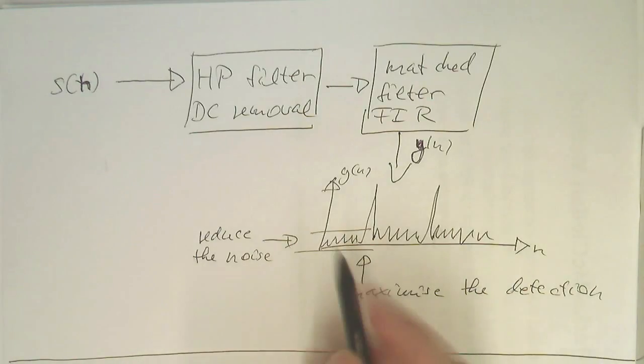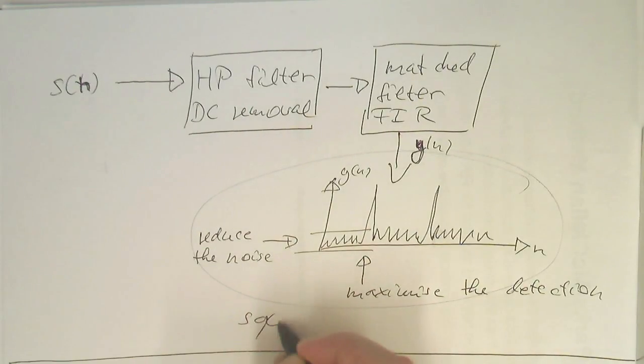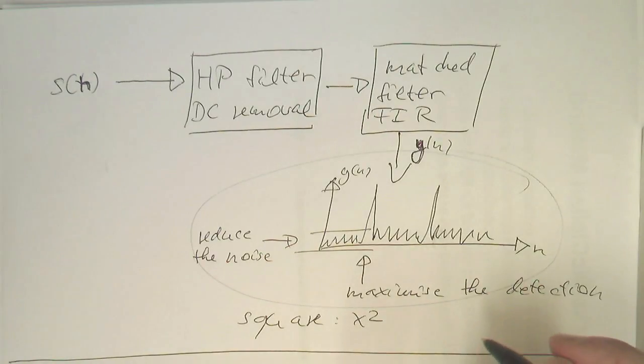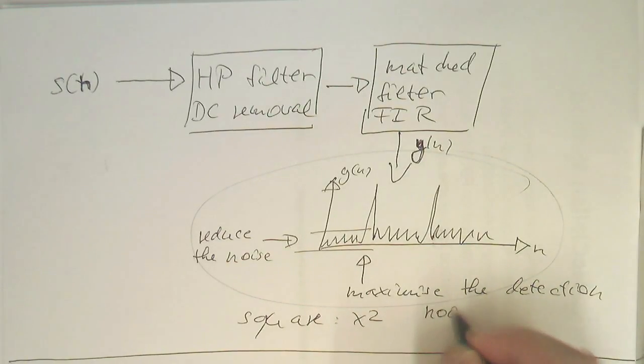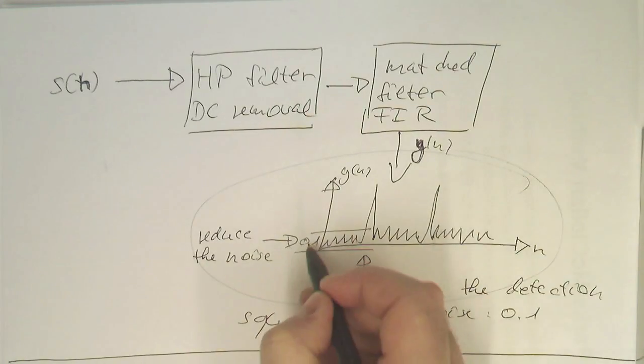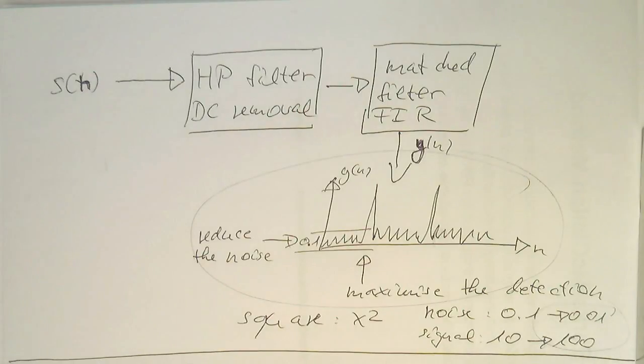So, how do we do this? What we do is, we take this, this signal here, and we just square this signal here. Square it. So, like X square. And so, the squaring operation will, for example, if the noise is 0.1, yeah. So, if this is here 0.1, then obviously this turns into 0.01. And the signal, and the signal, let's imagine this is 10. This turns into 100. Yeah. So, the difference between these two values becomes larger. So, once we have squared this, yeah. So, let's just draw again.